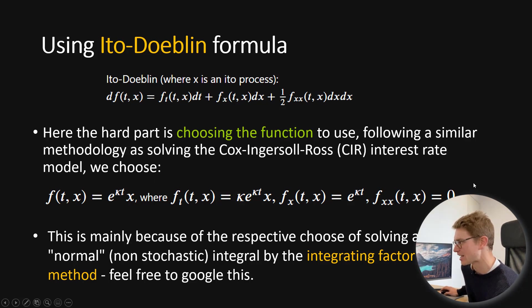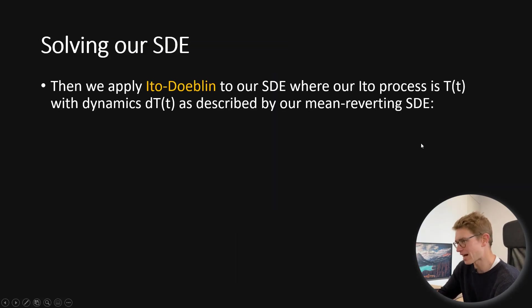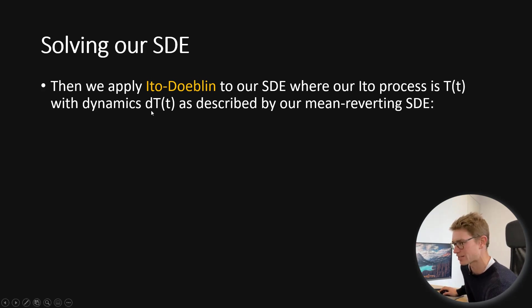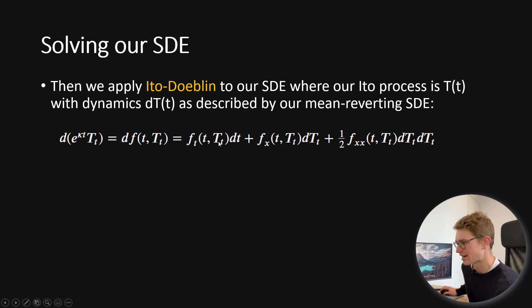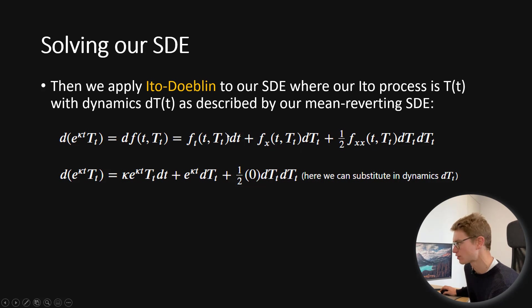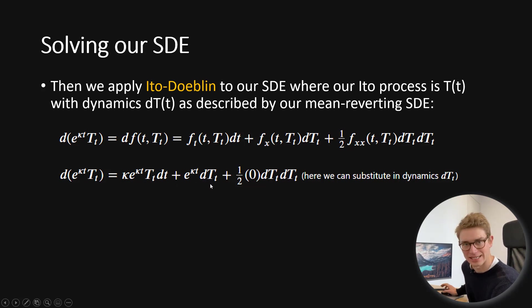Now that we've found those partial derivatives, we can plug them into the Itô-Doeblin formula and substitute in our SDE for temperature. We apply the Itô-Doeblin formula with our function e^(kt) to the temperature Itô process, with dynamics described by the mean-reverting SDE. The dynamics of e^(kt)·T equal the Itô-Doeblin formula, where instead of x we place the temperature T. Once we substitute in those partial derivatives, the second-order term is zero and cancels, leaving us with a drift term and our integrating factor multiplied by the original dt dynamics of the SDE.